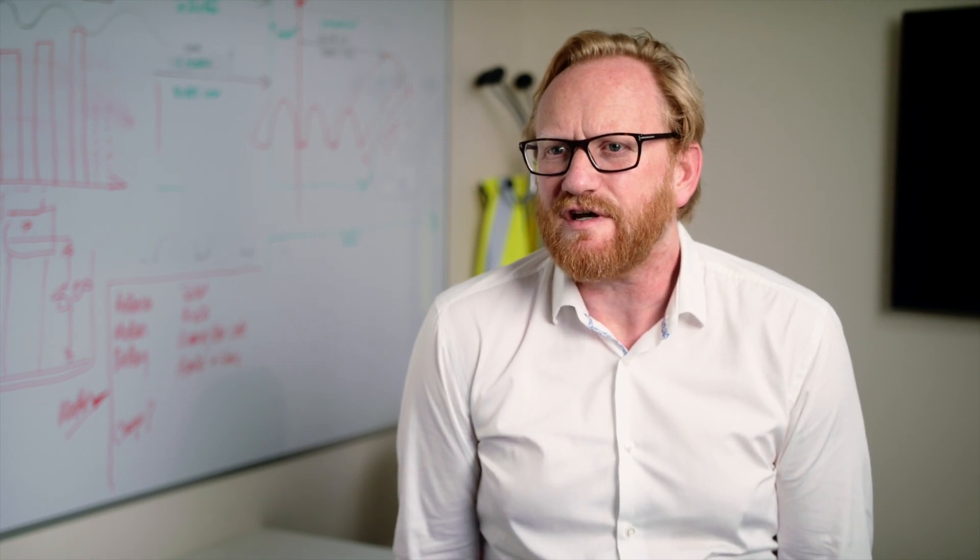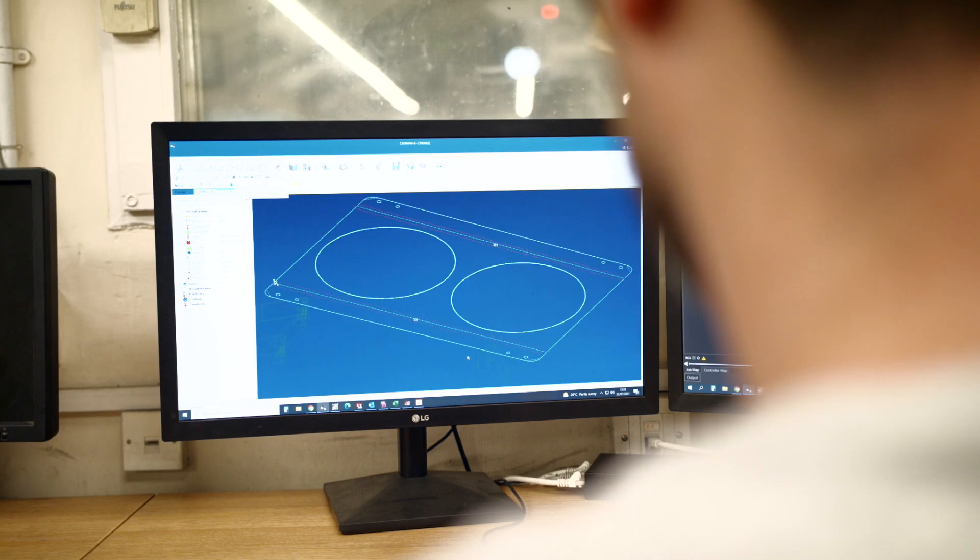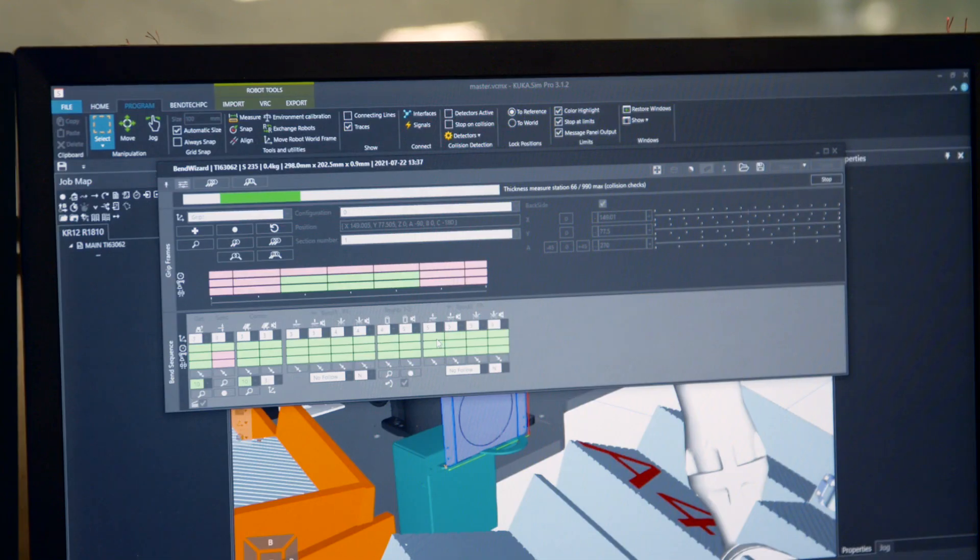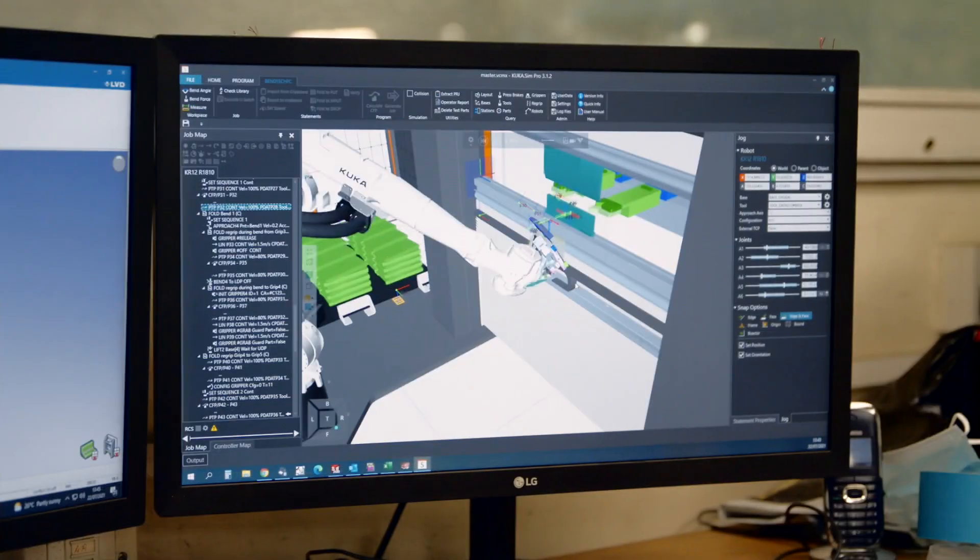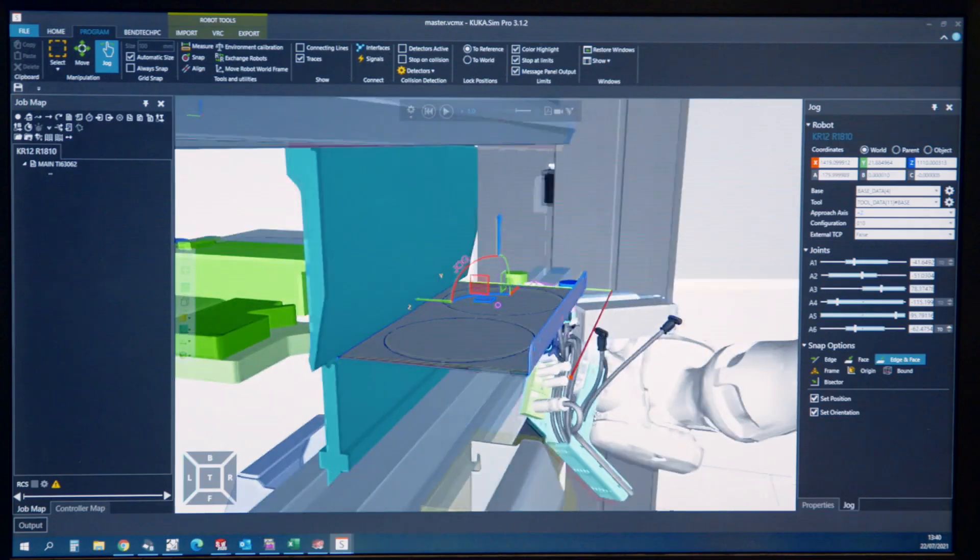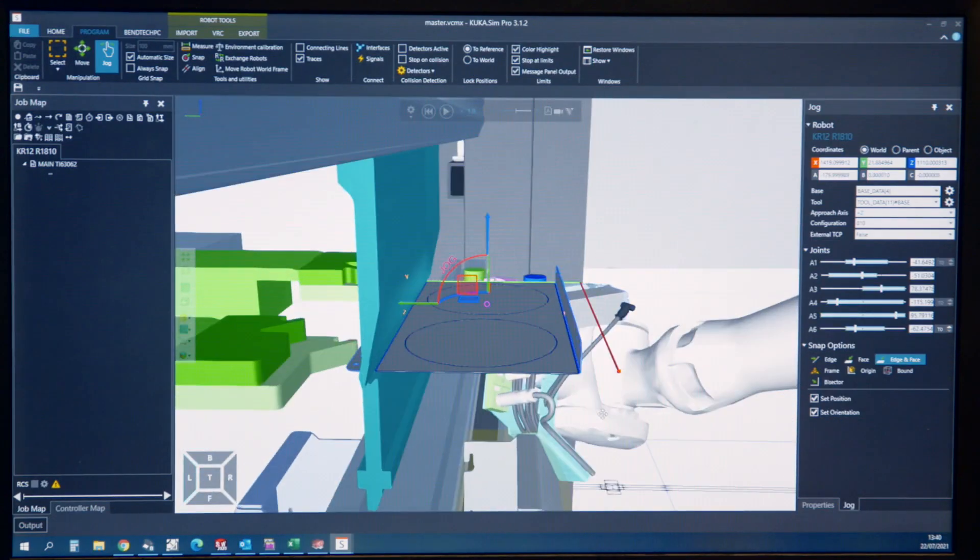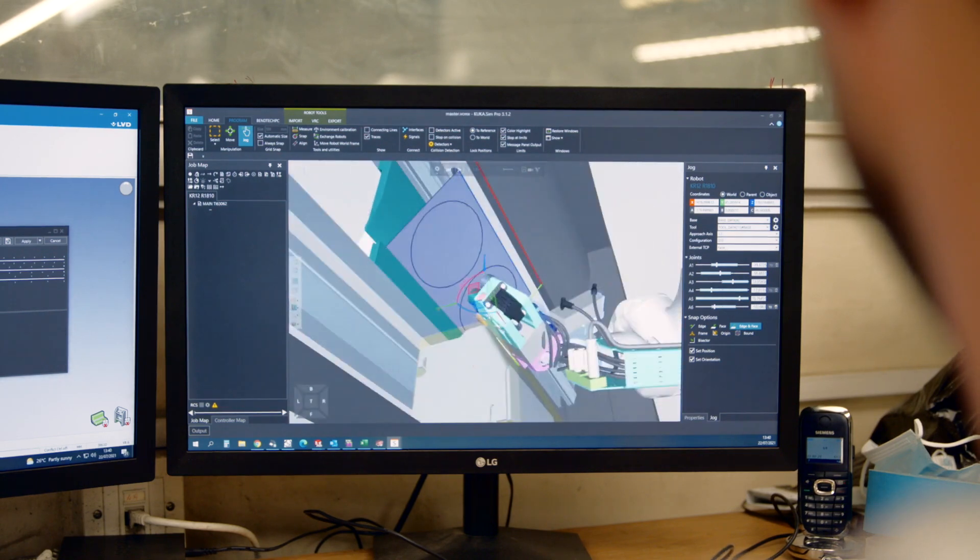One of the other key benefits of the Dynacel was the offline programming, the Cadman B. Sometimes we're creating quite complex nests where we've got smaller components and we join them together, folding multiple parts at the same time. It was really the programming software that was the advantage of the system.